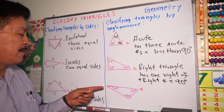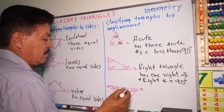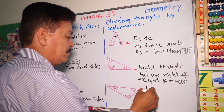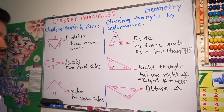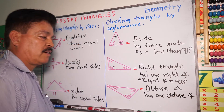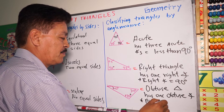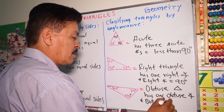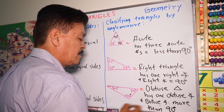The next one has angles of 120, 30, and 30 degrees. This kind of triangle, for the angle measure, is called obtuse — an obtuse triangle. An obtuse triangle has one obtuse angle. An obtuse angle is more than 90 degrees.